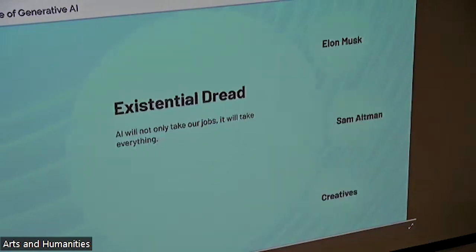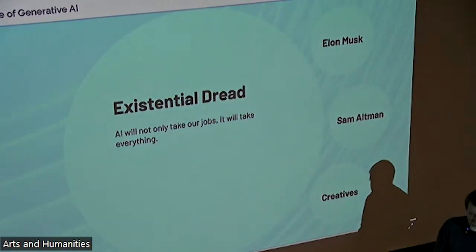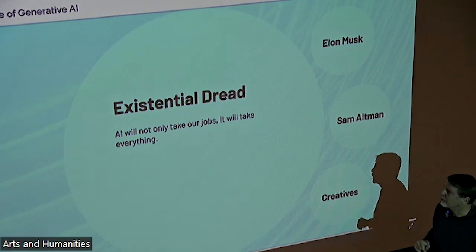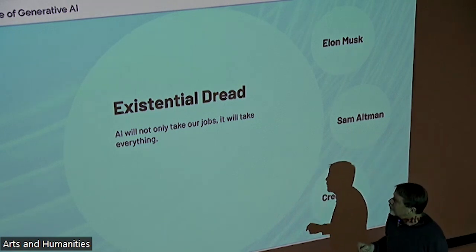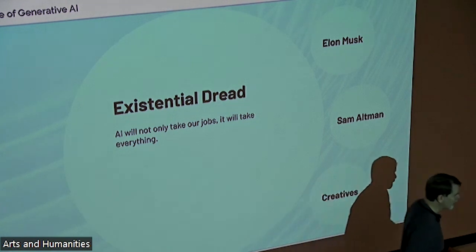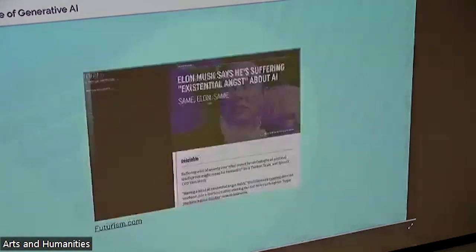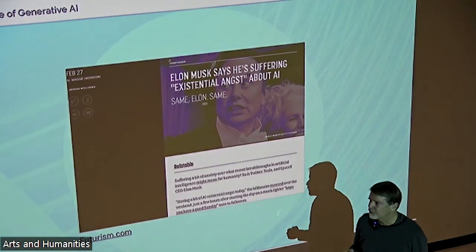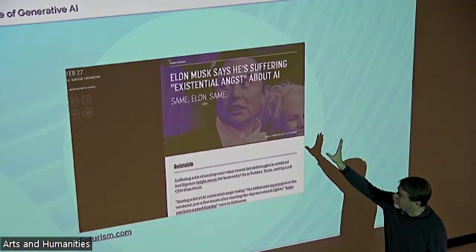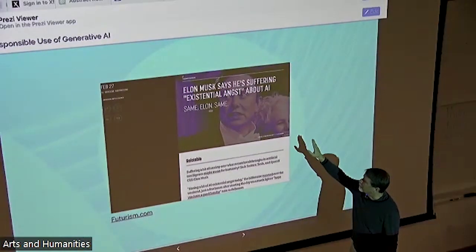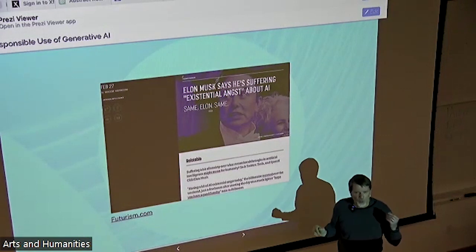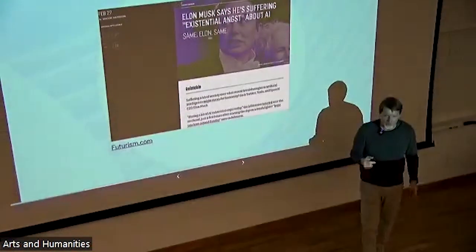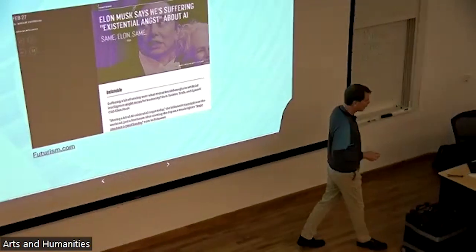There is also an existential dread door — a kind of negative hype. AI is not only here to take your jobs; it wants to take everything, all jobs, all of humanity with it. One of the foremost people who spends a lot of time in this area is Elon Musk. He's got a lot of existential dread, and on the one hand he's happy he's making all this money, but on the other he thinks there's something about this technology that's going to wipe out humanity sometime real soon.